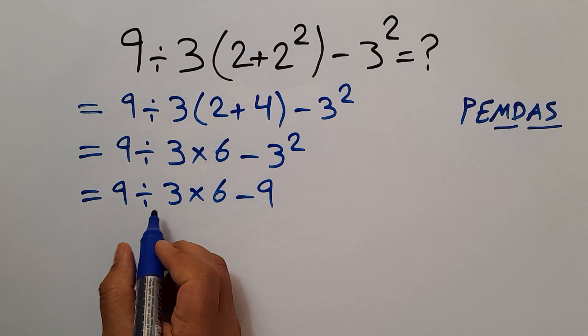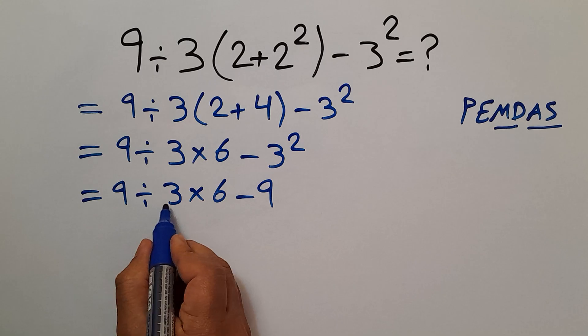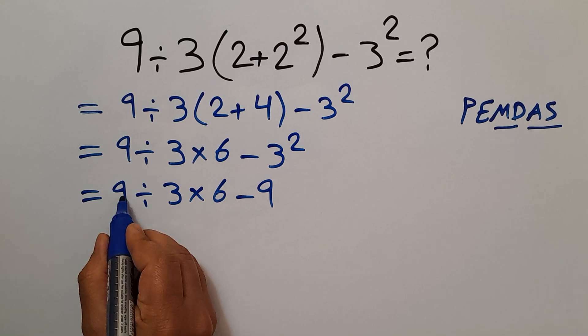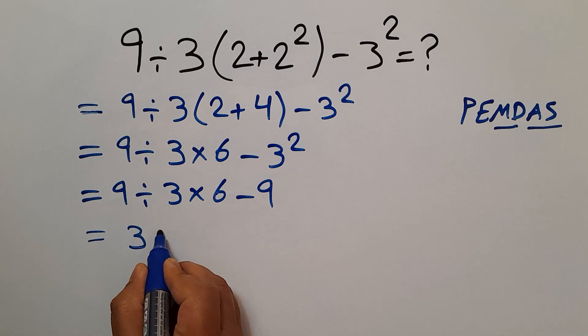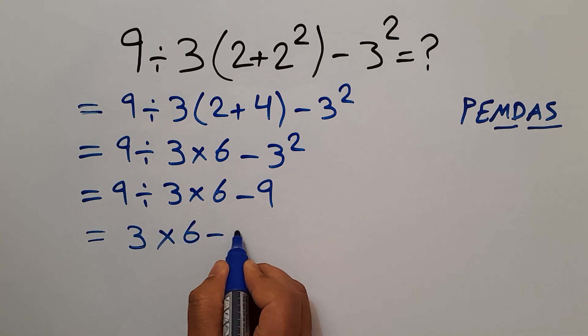Now we have to handle this division. Okay, 9 divided by 3 gives us 3. 3 times 6 minus 9.